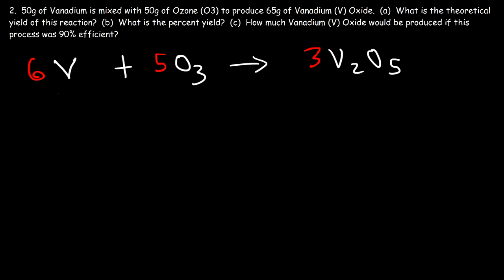This problem is a little different from the last one. In the last example we were given grams of just one reactant and knew which was limiting and which was excess. In this example we don't know. So we're going to convert the grams of each reactant to the grams of product, which is vanadium 5 oxide. The limiting reactant will give us a lower theoretical yield — whichever number is less, that's the actual theoretical yield, and the reactant that gave us that answer is the limiting reactant.